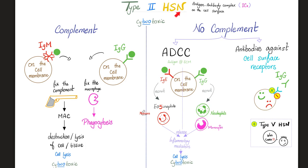Type 2 hypersensitivity: antigen-antibody complex on the cell surface. With complement involved, IgM or IgG fix the complement — the only antibodies that can do so — activating the classical complement pathway, ending with the membrane attack complex (MAC), which causes lysis and destruction. Alternatively, macrophages can be stimulated to phagocytose. The complement complements antibody function and produces proteins for inflammation and opsonization.